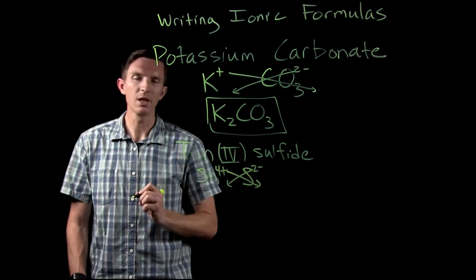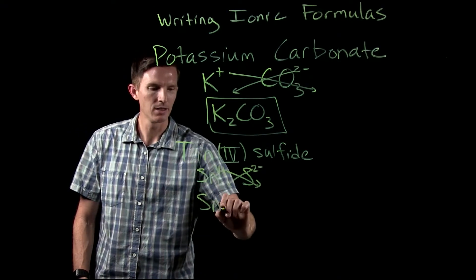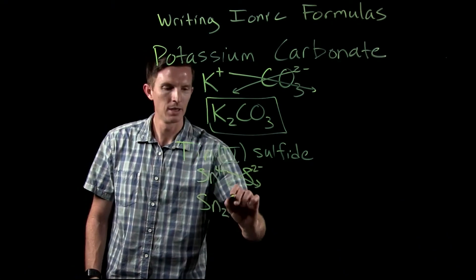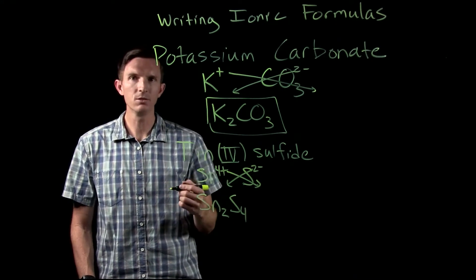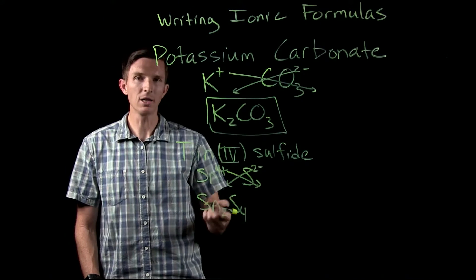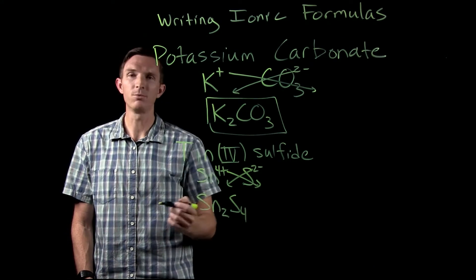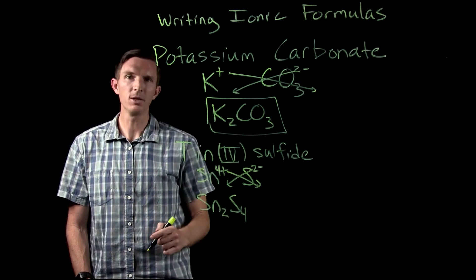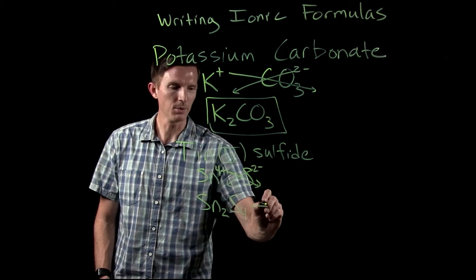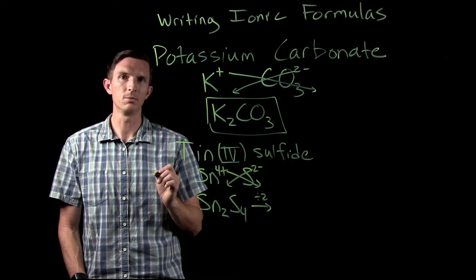We can apply the criss-cross rule here, and we get Sn2S4. Now if we go back to previous work, we remember that an ionic formula has the lowest possible ratio between two elements to make it neutral.